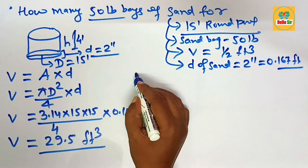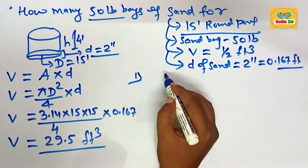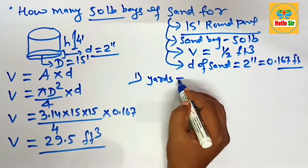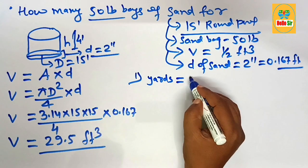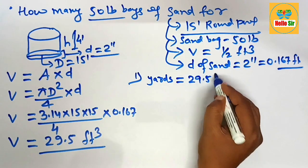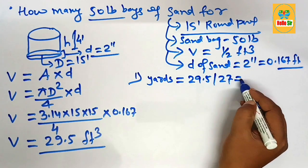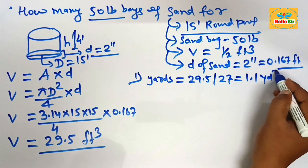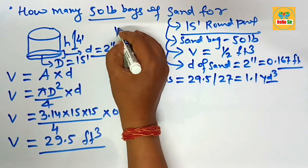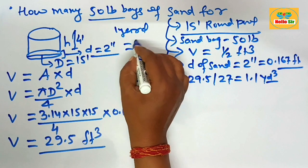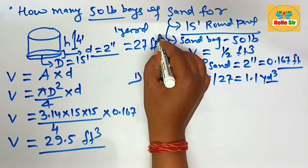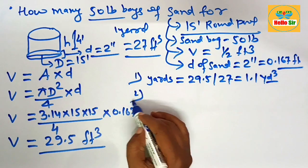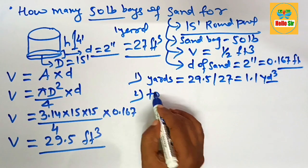If you want to calculate how many cubic yards of sand are required, divide the cubic foot volume by 27. This comes out to about 1.1 cubic yards. Remember: 1 cubic yard equals 27 cubic feet.